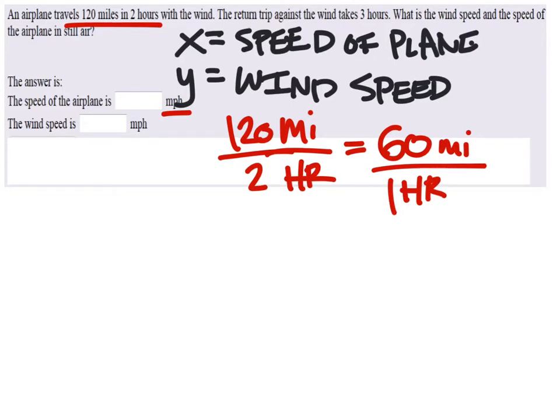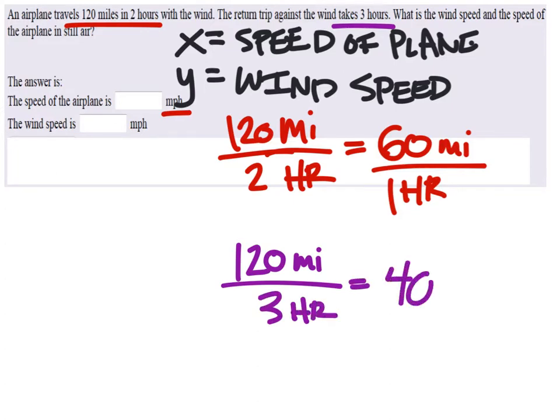This is not the speed of the plane in still air. This is the speed of the plane with the wind. On the other hand, it told us that the return trip took three hours. Since it's a return trip, it was the same distance, 120 miles, but now it took three hours. This new speed is 40 miles per hour.